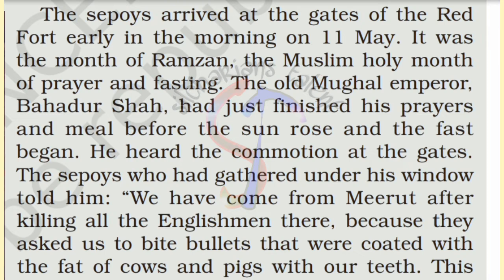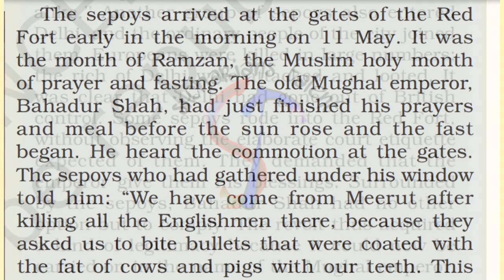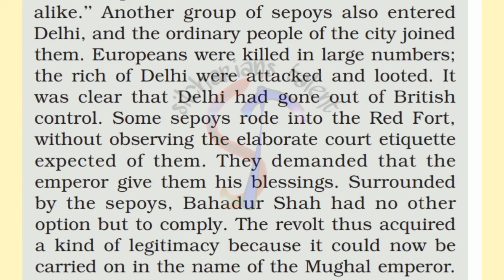The rich people of Delhi were attacked and looted, and Europeans were killed. Now surrounded by the sepoys, Bahadur Shah had no other option but to support them. The people needed a leader, so they went to Bahadur Shah. The revolt thus acquired a kind of legitimacy because it could now be carried on in the name of the Mughal Emperor.